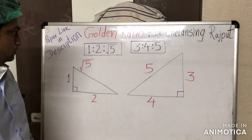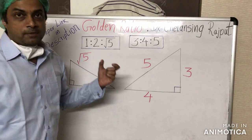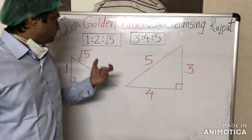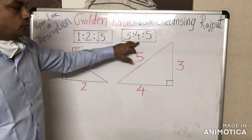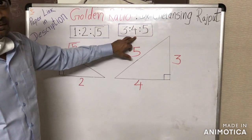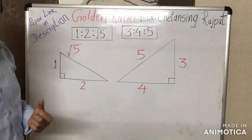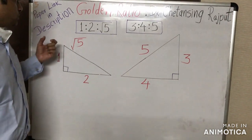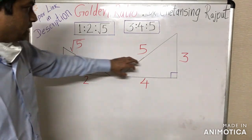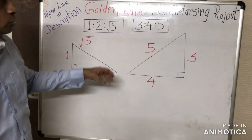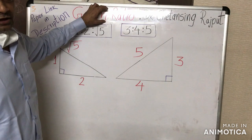In the last part of this video we saw the classical geometric relationship between the 1:√5 triangle and the 3-4-5 Pythagorean triple. In this part we are going to see some detailed geometric features of these two triangles which enable them to combinedly impart the precise value of the golden ratio.